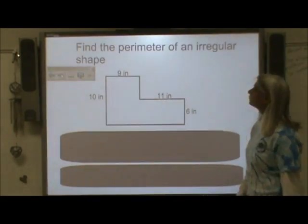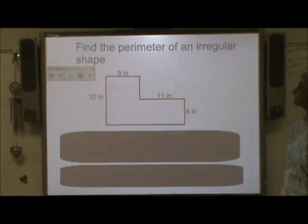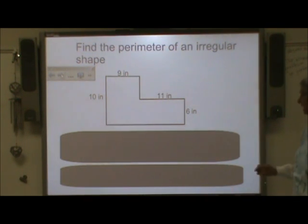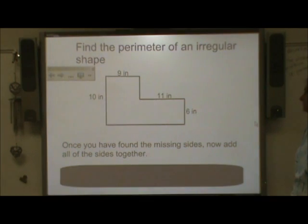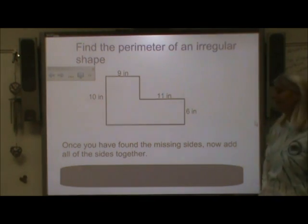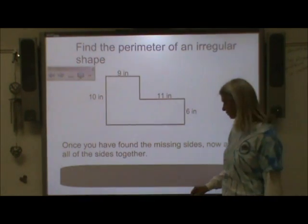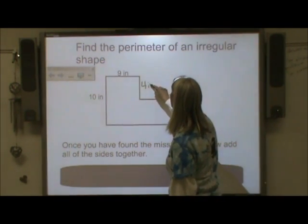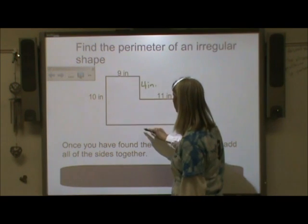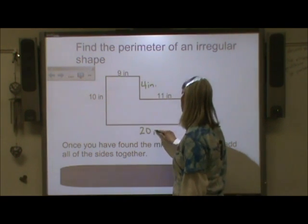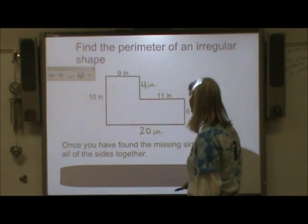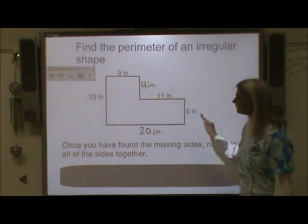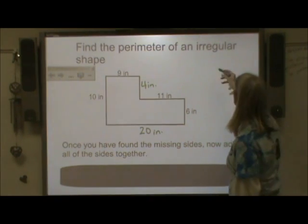Now, the next thing I want to show you is how to find the perimeter of this same irregular shape. After I have found the missing sides, I now need to add all those sides together. So let's write in our missing sides — that one was four inches and this one was twenty inches.